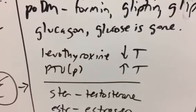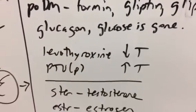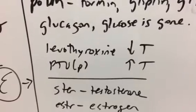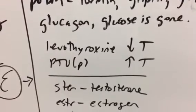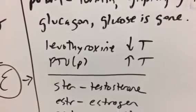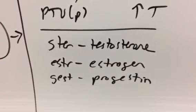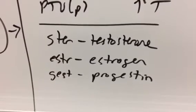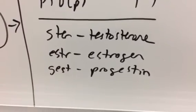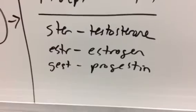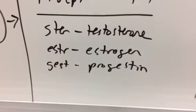Levothyroxine, when you have too little thyroid hormone, you have to replace it. And then PTU, when the thyroid hormone is up, you kind of just put a little P after that U. And then that'll help decrease it. Testosterone, the male sex hormones are usually going to have some kind of steroids. So S-T-E-R is the stem. Estrogen is E-S-T-R, and gest, progestin.